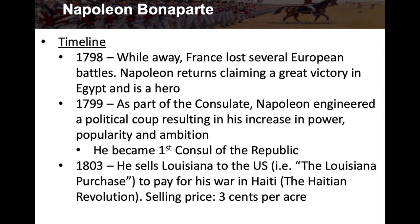While he was away in Egypt, France lost several European battles. Napoleon returned claiming a great victory in Egypt and was welcomed as a hero — even though he didn't actually win. So he was getting territory from Austria, claiming victory in Egypt, and becoming very popular. In 1799, as part of the consulate, Napoleon engineered a political coup, resulting in increased power, popularity, and ambition — and he becomes the first consul of the Republic.